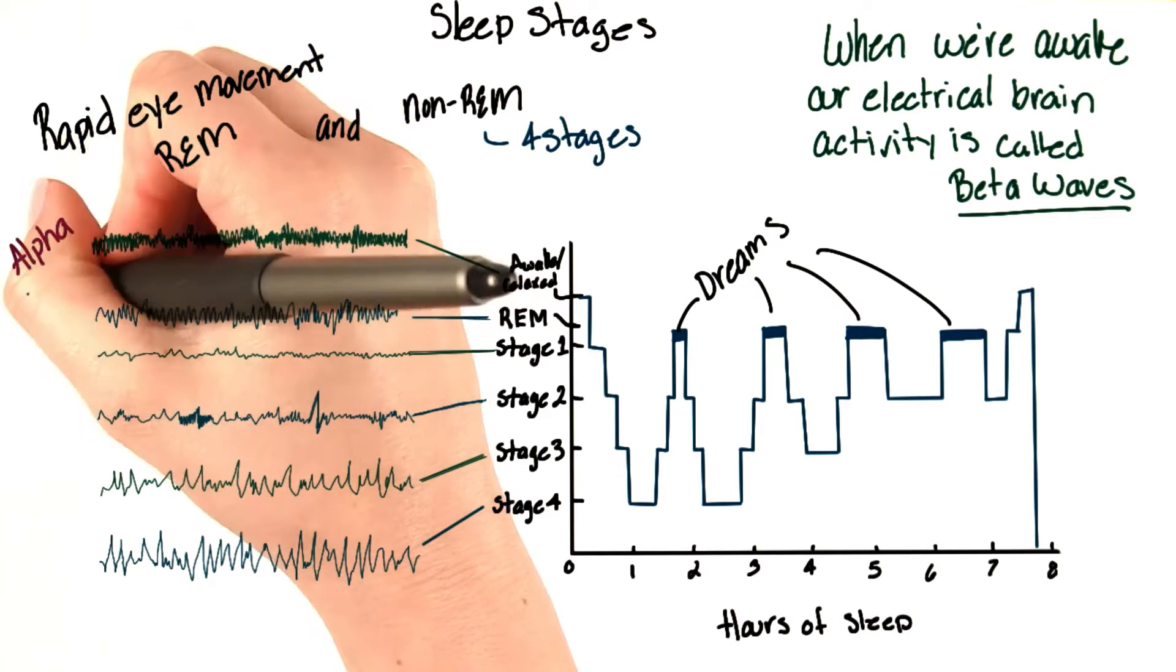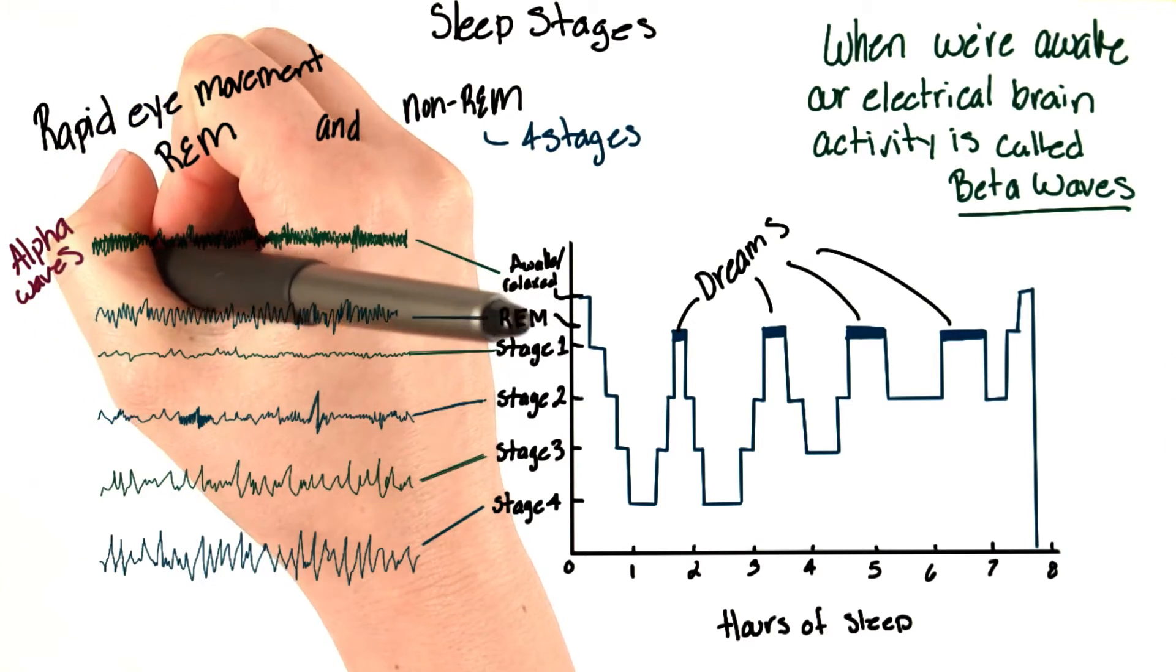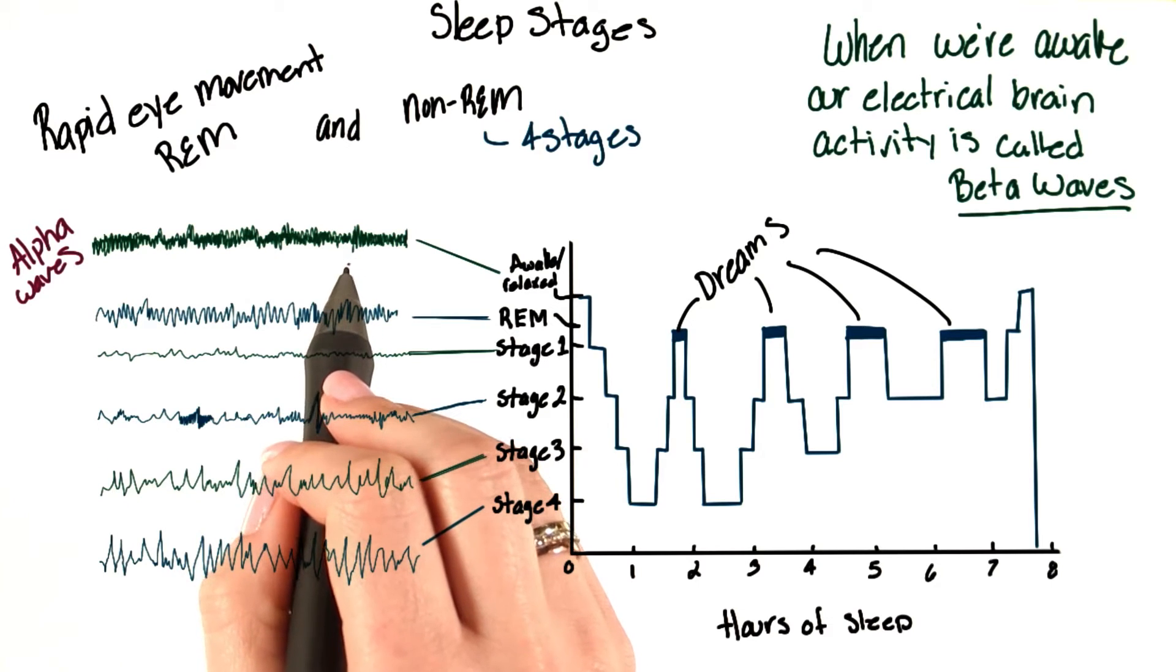However, when we're relaxed, our brain activity slows to alpha waves, as you can see here. This is when we become kind of drowsy.